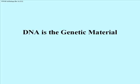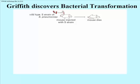Hello. This module is on the stuff of genes — DNA as the genetic material. First, let's recall Griffith's discovery of bacterial transformation in the 1920s. Griffith was actually looking for a way to produce a vaccine against the pneumonia that killed many people during the influenza epidemic of 1918.